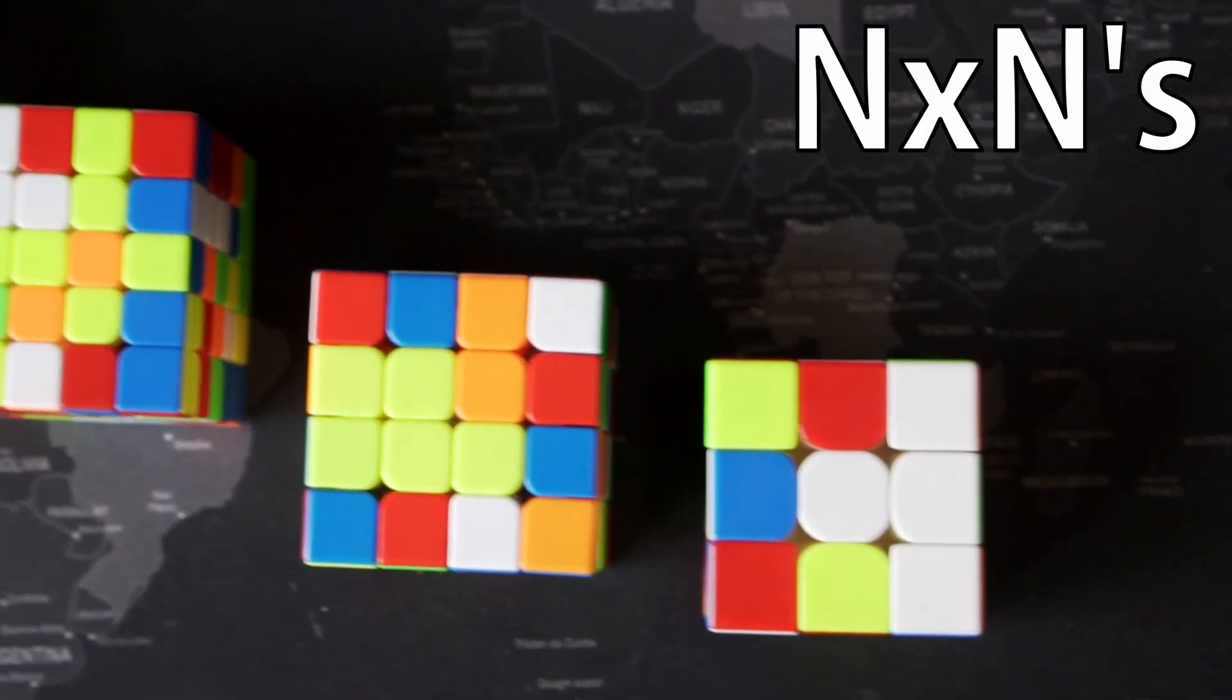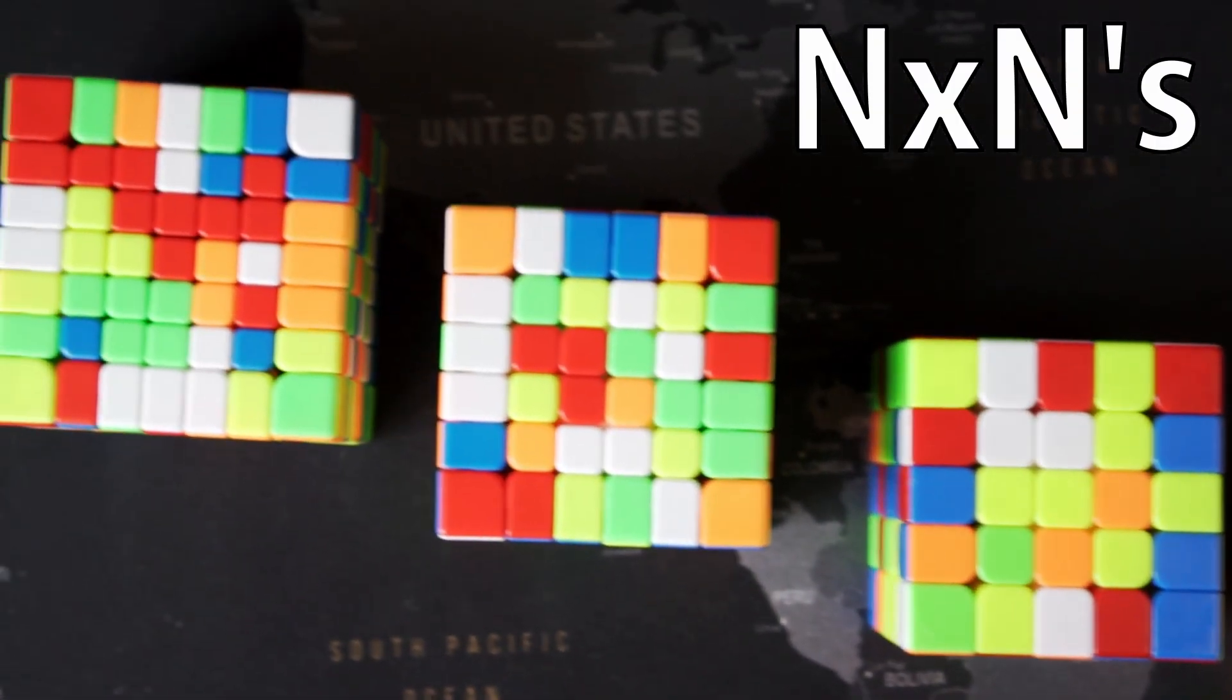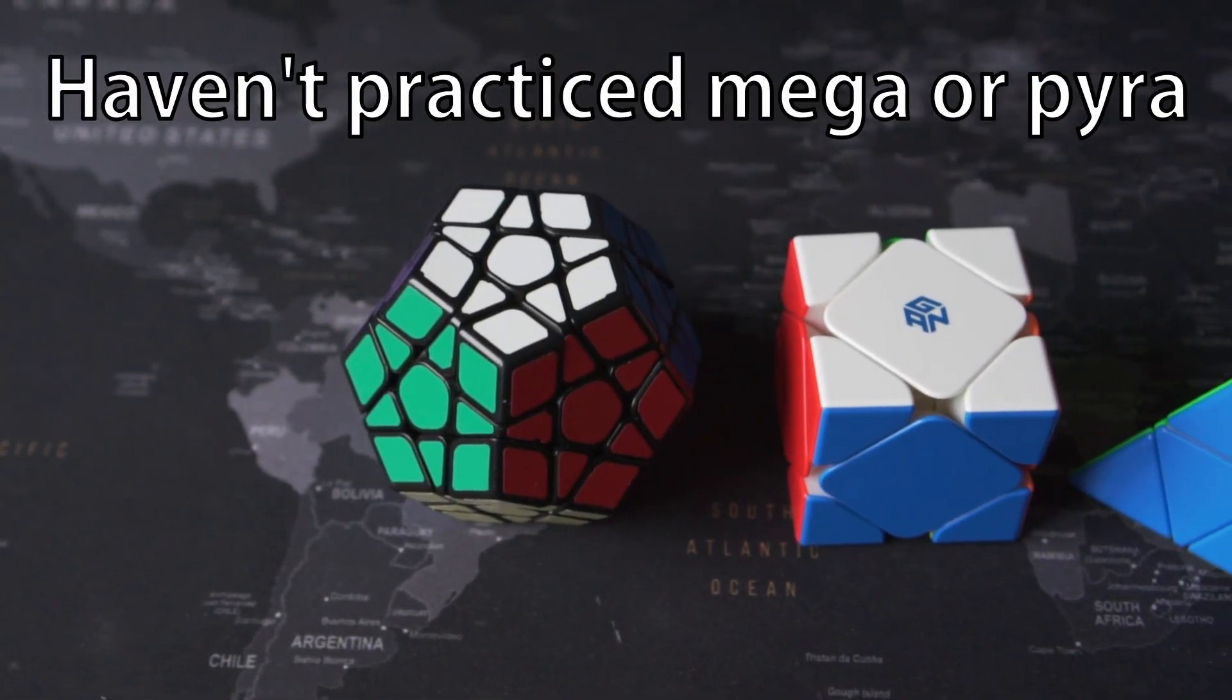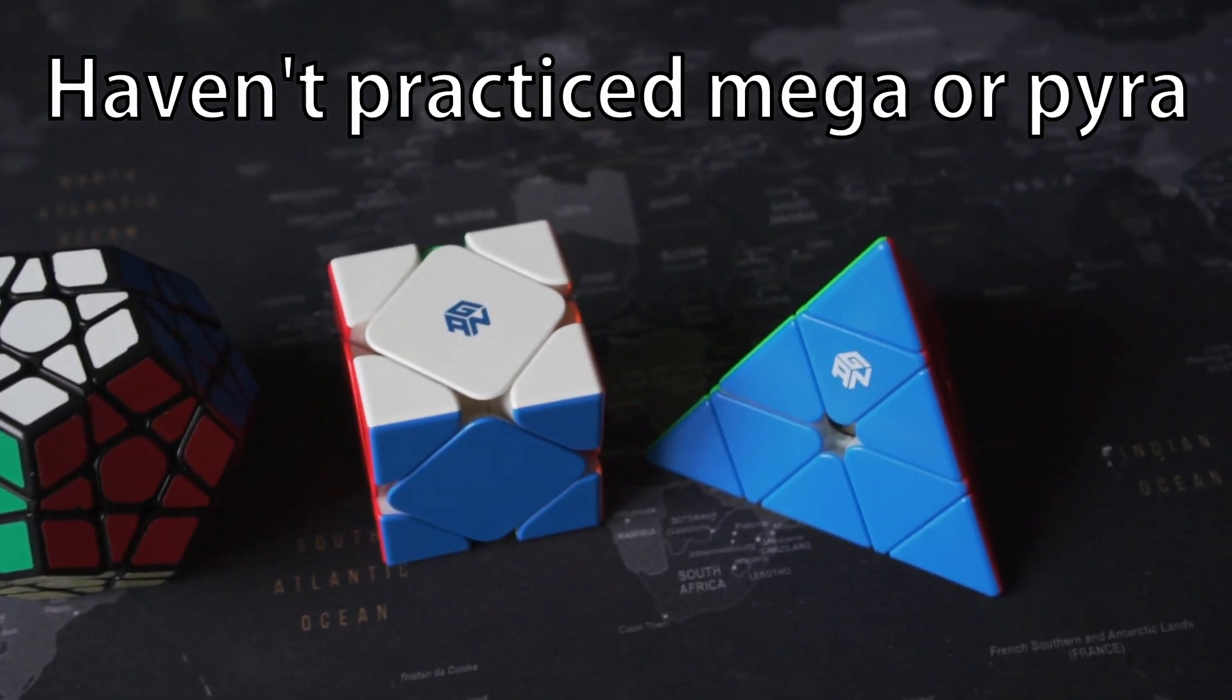Basically, I'm focusing on the nxn's. nxn's are any Rubik's cube in the shape of a cube, so I haven't been doing much skewb or megaminx or something like that.